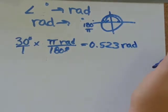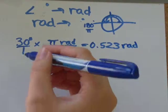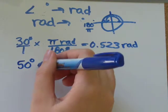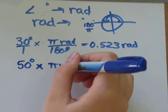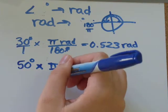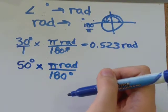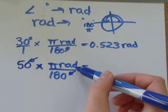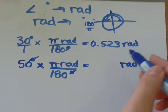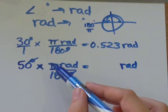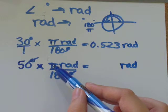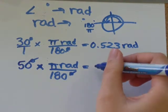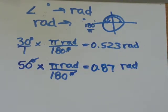So let's do another one. Let's do 50 degrees is how many radians. We'll multiply by pi radians over 180 degrees. My units of degrees will cancel, and I'll just be left with radians. And 50 times pi equals about 157 divided by 180, I'll get 0.87 radians.